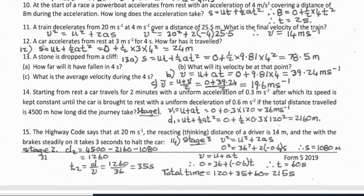Question 12: a car accelerates from rest at 3 meters per second squared for 4 seconds — how far has it traveled? Using s = ut + ½at²: 0 plus ½ times 3 times 4² gives 24 meters.